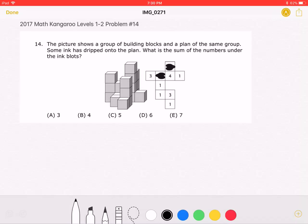This is the 2017 Math Kangaroo Levels 1-2, problem number 14. The picture shows a group of building blocks and a plan of the same group. Some ink has dripped onto the plan. What is the sum of the numbers under the ink blots?